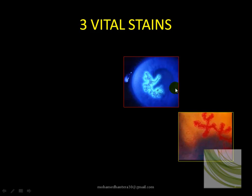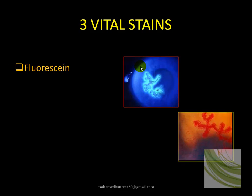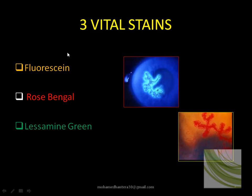The cornea examination has everything in threes: three questions, three equipment types, and three vital stains — fluorescein, rose bengal, and lissamine green.